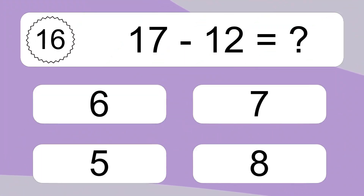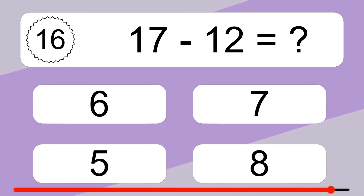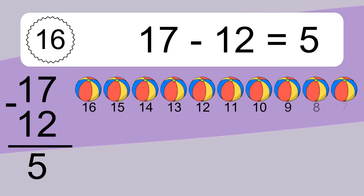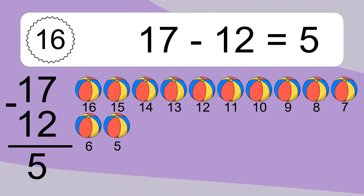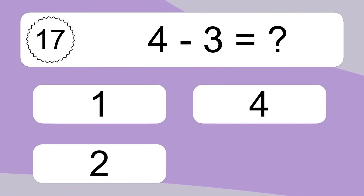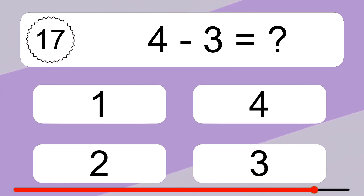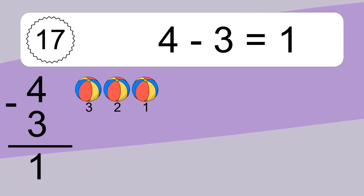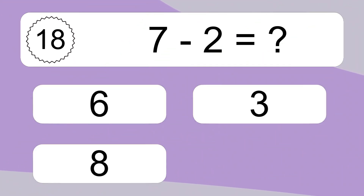17 minus 12 equals what? 17 minus 12 equals 5. Let's count it: 16, 15, 14, 13, 12, 11, 10, 9, 8, 7, 6, 5. 4 minus 3 equals what? 4 minus 3 equals 1. Let's count it: 3, 2, 1.